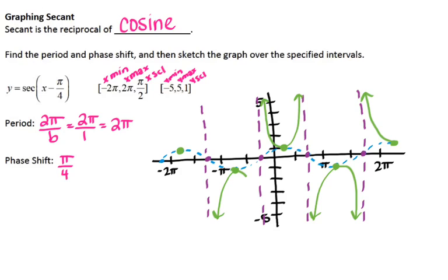To actually sketch the graph of secant, you're going to start at all of the peaks and extend towards the asymptotes without crossing or touching them. The green curves I'm drawing right now are the graph of secant. The green curve is the actual graph of secant.